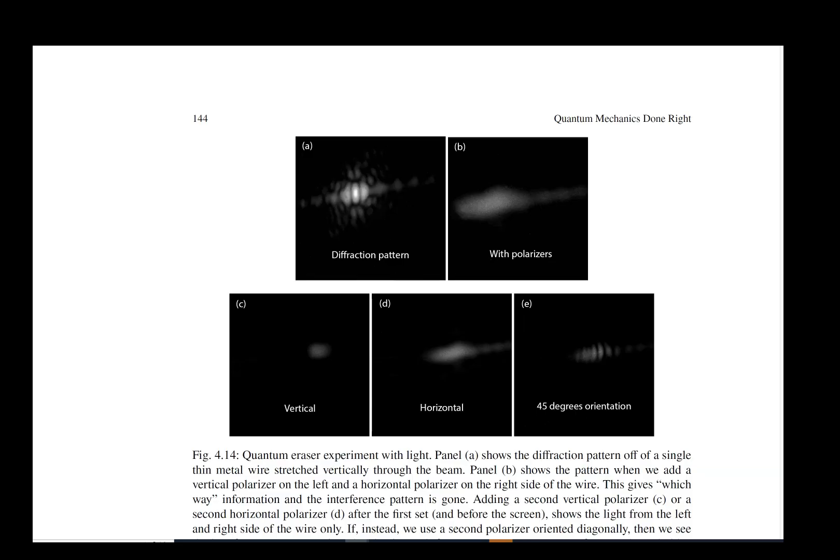Here this is done with a diffraction about a wire but it's very similar to a two-slit experiment. With polarizers you can see that if you put polarizers on the device, the diffraction pattern which is in panel a gets lost in panel b when you put cross polarizers on either side of the wire.